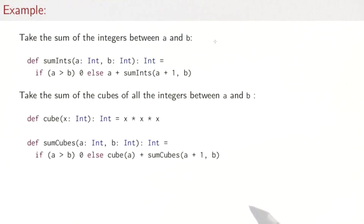Let's see an example. Suppose we want to take the sum of all the integers between a and b. We could write something like this: sum ints, it takes the bounds as parameters, a and b. And we ask, if a is greater than b, then there's nothing to sum and we would return zero as the logical value for that. Otherwise, we would return a plus a recursive call of sum ints of a plus one and b.